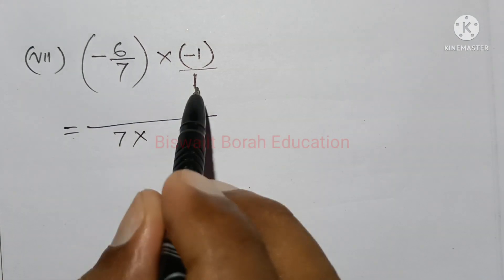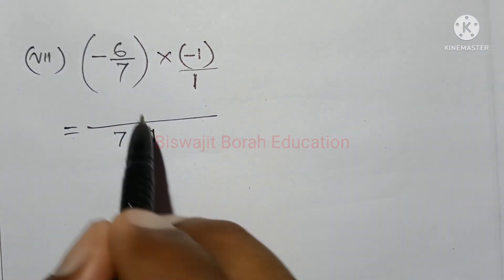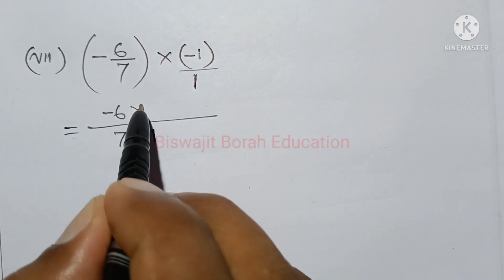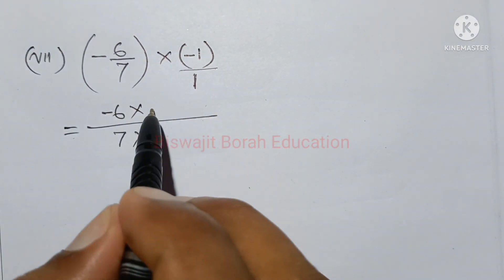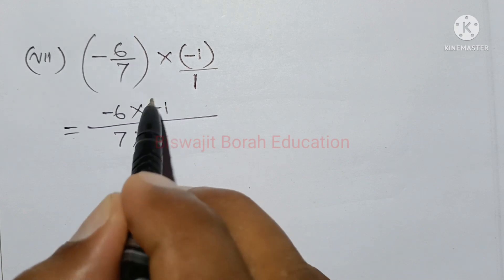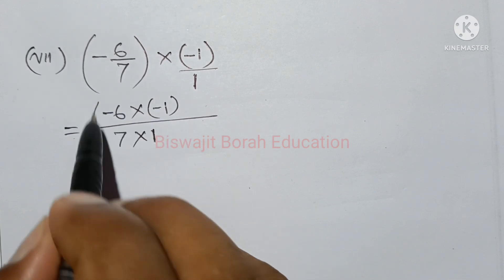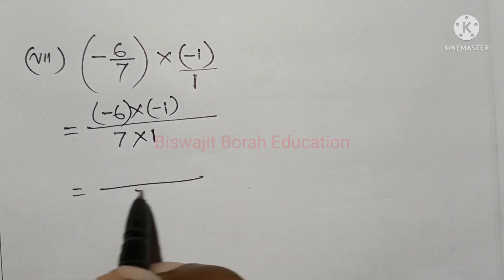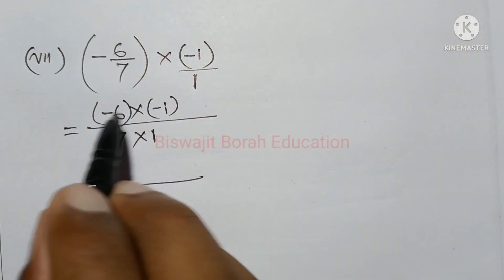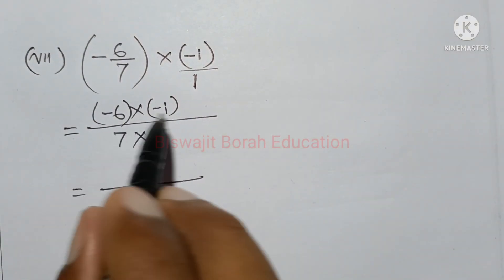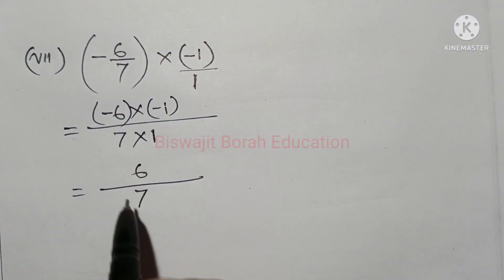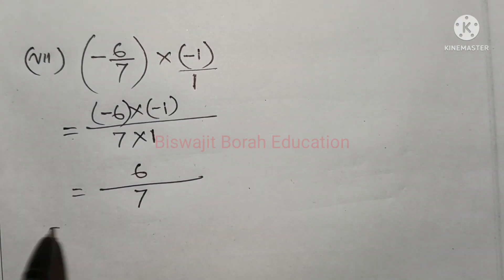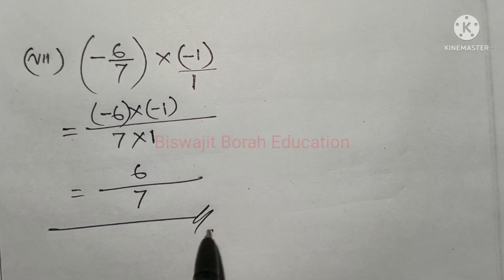So, 7 into 1. You get minus 6 into minus 1. So minus 1 plus 1 — the final answer is 6 by 7. So the answer is minus 1.